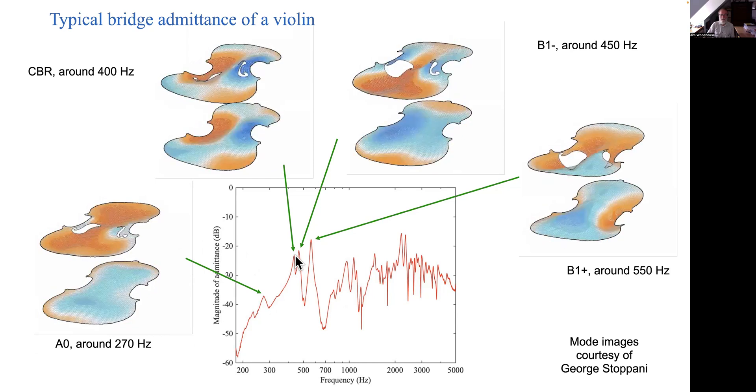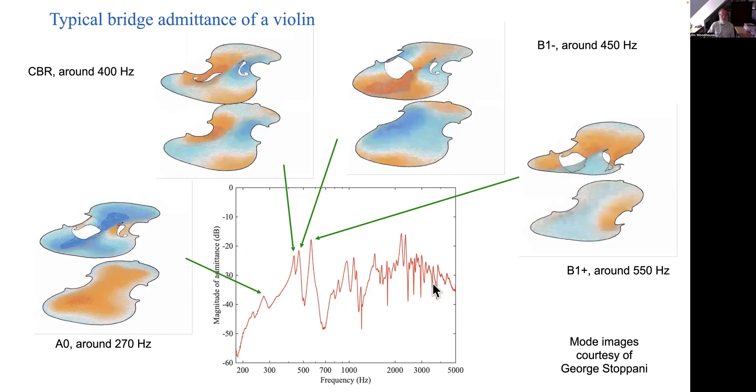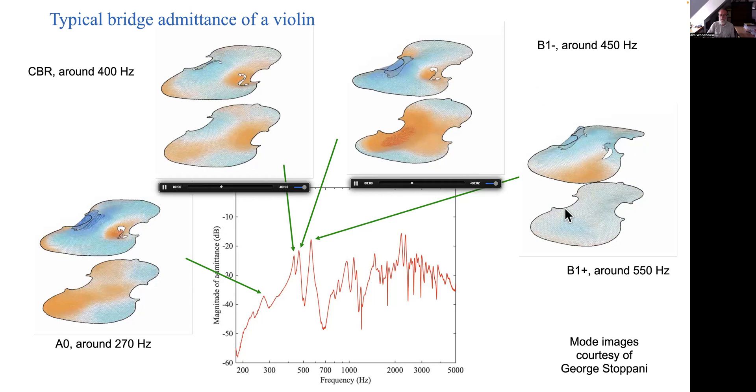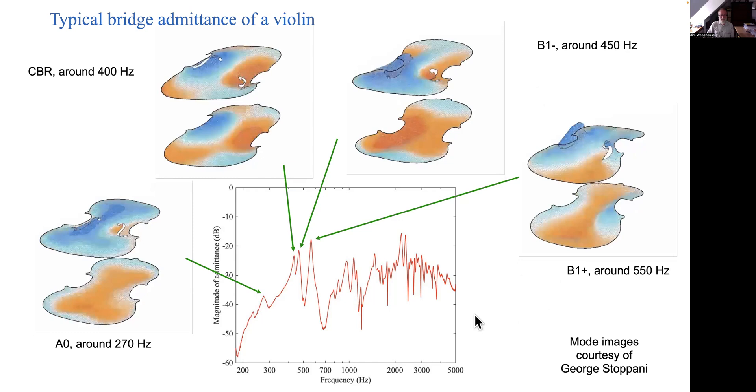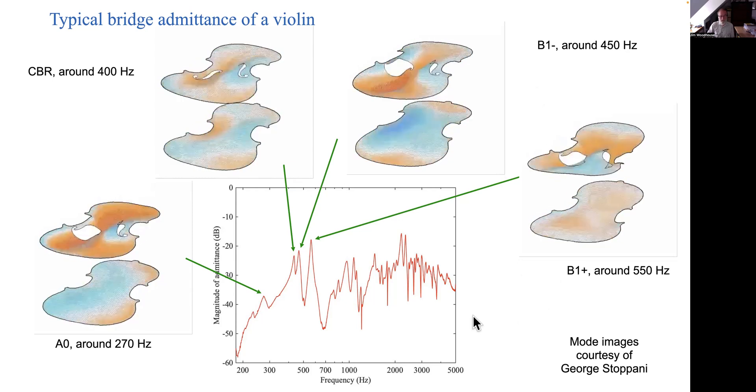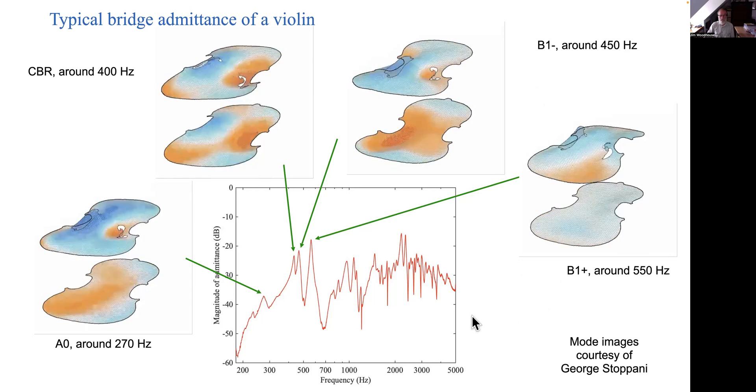Sometimes these are called signature modes. In the violin world these have jargon associated with them. These things are called CBR and B1 minus and B1 plus. That's a story for another day. So at low frequency the frequency response gives you peaks and those peaks are associated with the vibration modes of the instrument.